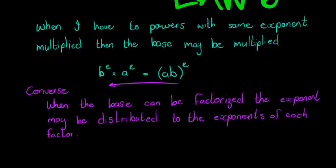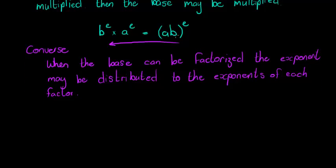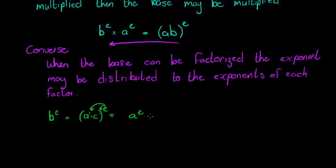So what does that mean? Here's my base that can be factorized. I have a base — let's call it b to the power of e — but now I say my base can be factorized, so I can break it up into two factors, let's call them a and c. So instead of b I've got a times c, but it still has the exponent e. What I can do is distribute the exponent: a to the power of e times c to the power of e.